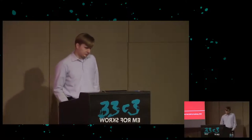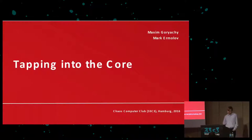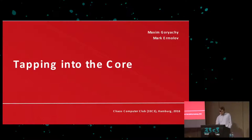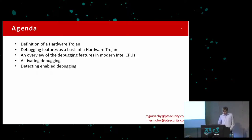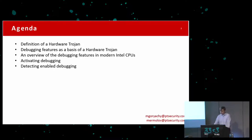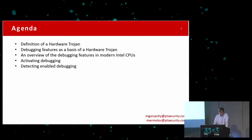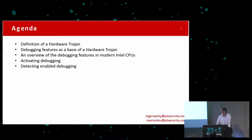I would like to go over the topic of hardware Trojans and talk about one of the modern Intel CPU design features that can be used for this purpose — it's Direct Connect Interface. We are going to review the debugging interface as a basis of such a Trojan on the modern Intel CPU, review Direct Connect Interface, its JTAG-like interface and its activation, and then I'm going to talk about several tips that can help you detect such an attack.